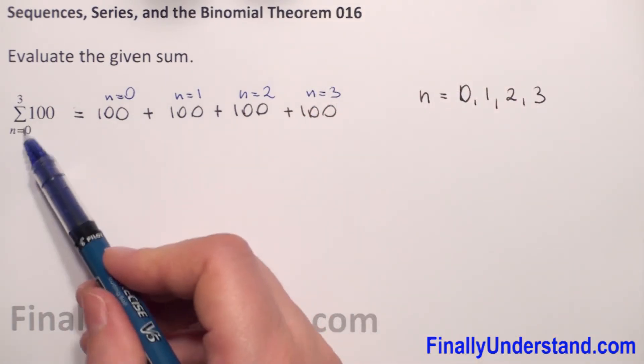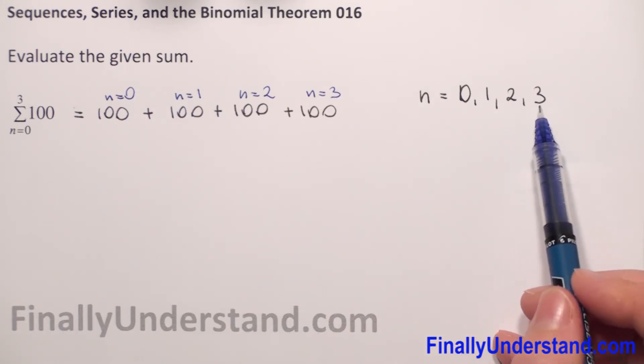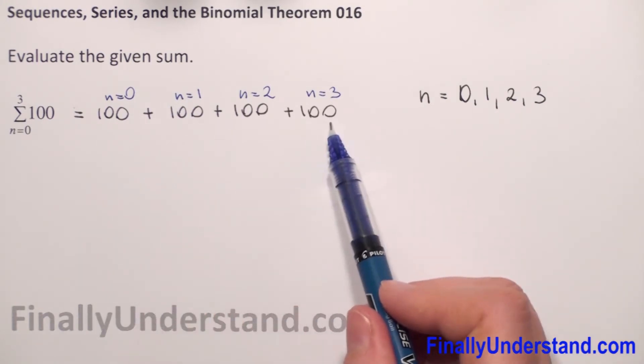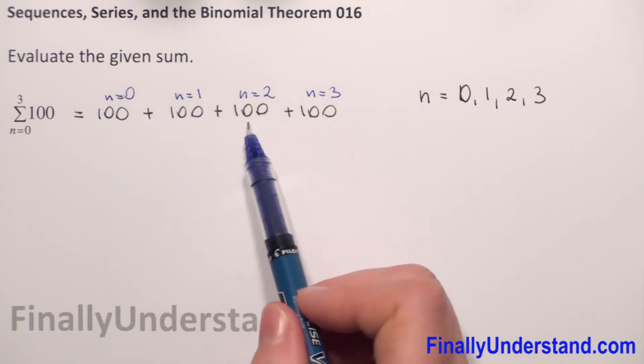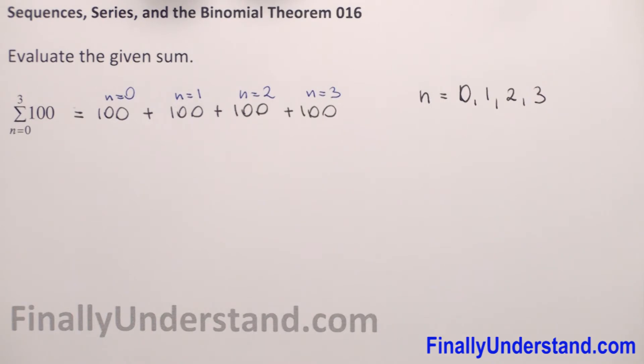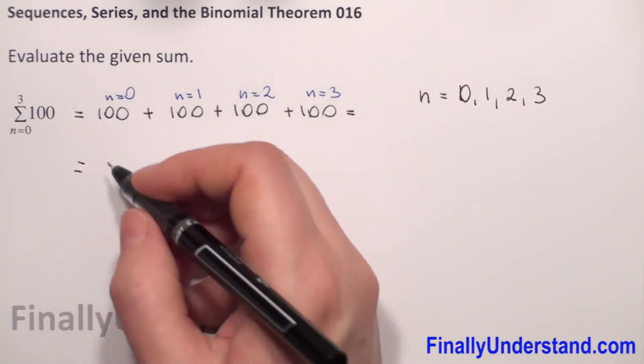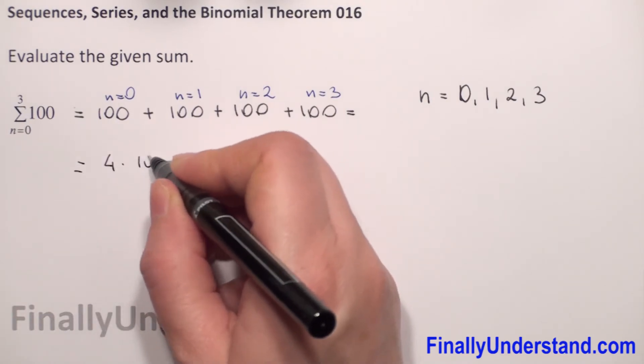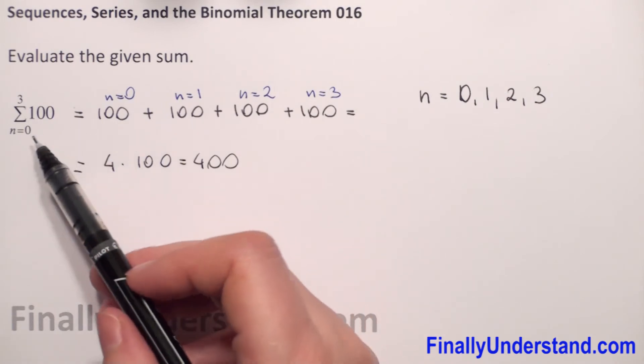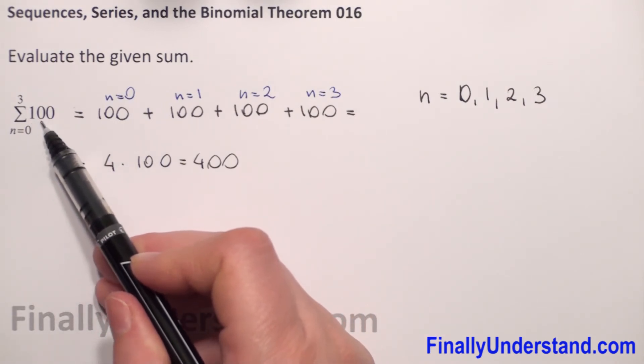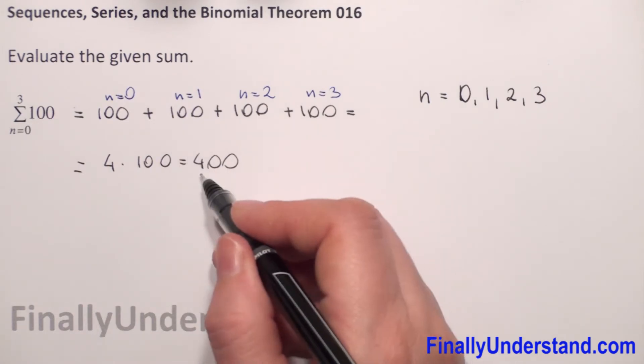We have n from 0 to 3, so we have 1, 2, 3, 4 terms. We have to add 4 terms. So we have 4 times 100. This is equal to 400. So the sum of 100 from 0 to 3 equals 400.